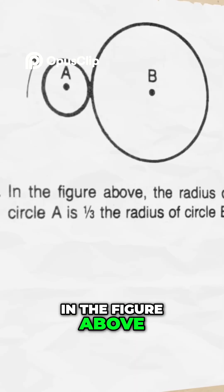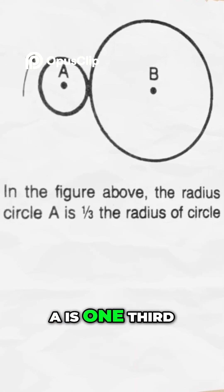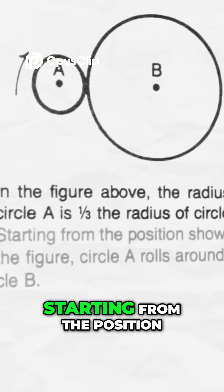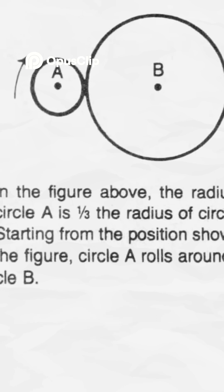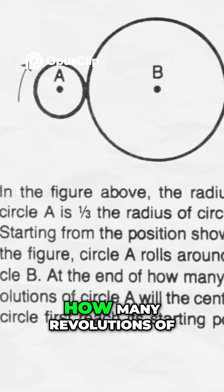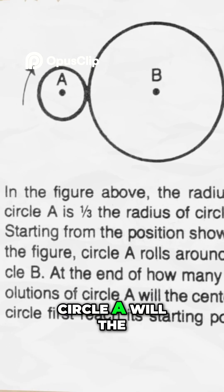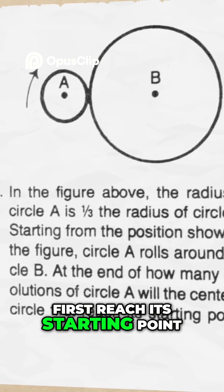In the figure above, the radius of circle A is one-third the radius of circle B. Starting from the position shown in the figure, circle A rolls around circle B. At the end of how many revolutions of circle A will the center of the circle first reach its starting point?